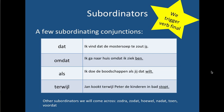Examples of subordinating conjunctions — those words that trigger verb-final, that kick all the verbs to the end of the sentence — include 'dat,' probably the most common one. 'Ik vind dat de mosterdsoep te zout is' — 'dat de mosterdsoep te zout is' is the subclause, and 'is' is kicked to the end. 'Omdat,' meaning because: 'Ik ga naar huis omdat ik ziek ben' — 'ben' is at the end. Normally you would say 'ik ben ziek' with the verb in second place, but 'omdat' triggers verb-final — and voilà, there it is.